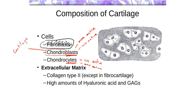There are two different cell types to focus on in cartilage tissue: chondroblasts and chondrocytes. In terms of the matrix, cartilage is a specialized kind of connective tissue. The ECM is going to be the main component — the majority of the tissue is the ECM, and the minority will be the cells.